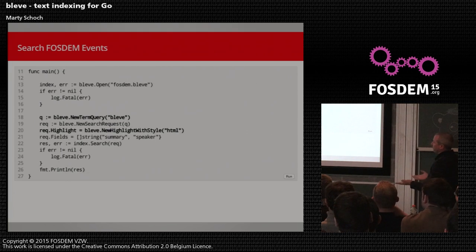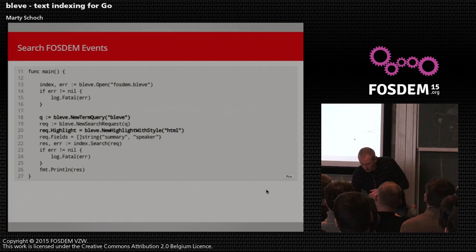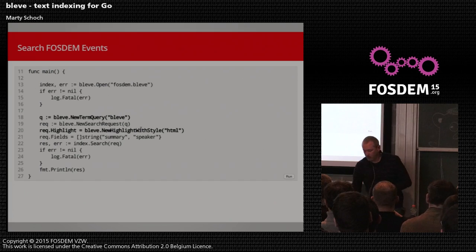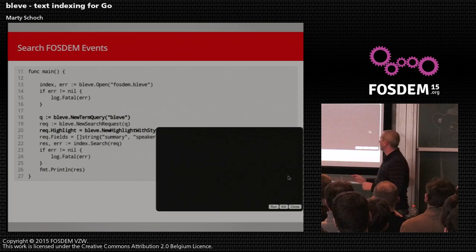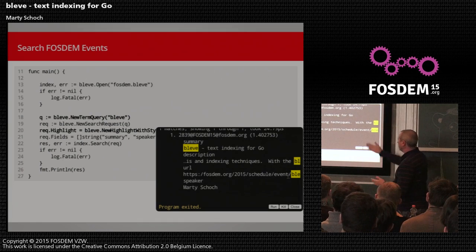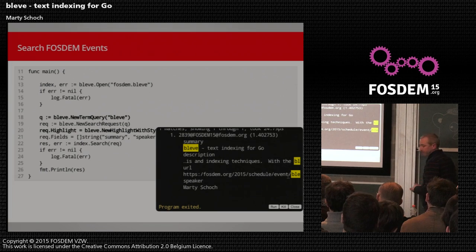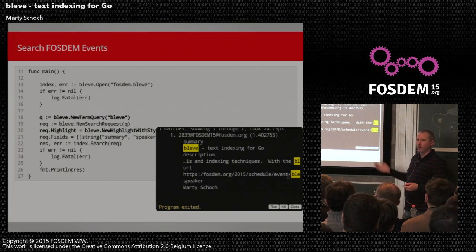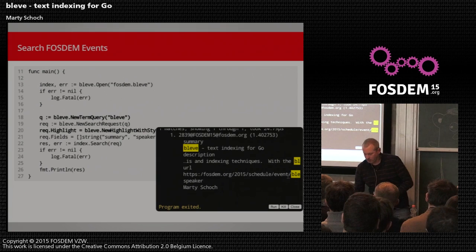Starting with a simple term query, I'm searching for the term 'bleve' — the name of this library. I'm also adding on line 20 a request to highlight with a style called HTML in the results. Here you can see it's highlighting in yellow all the matches for that term bleve, and it did match this particular talk we're in right now. We have two highlighter styles: ANSI formatting for terminals and HTML. It's designed to be pluggable so you could map it to other things.